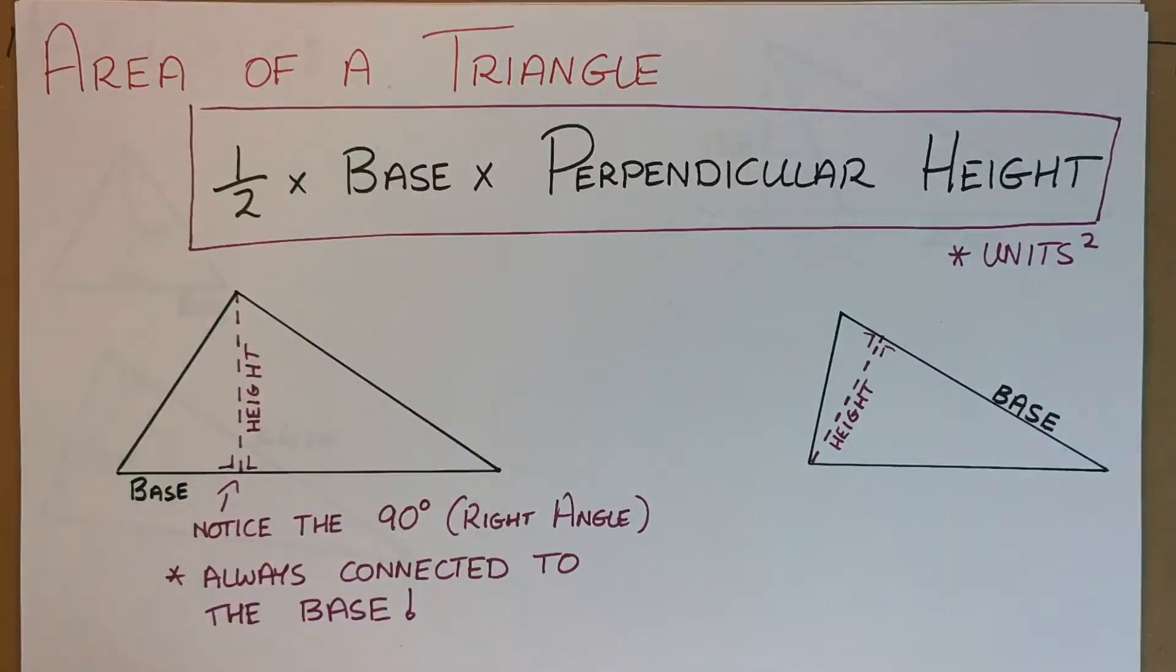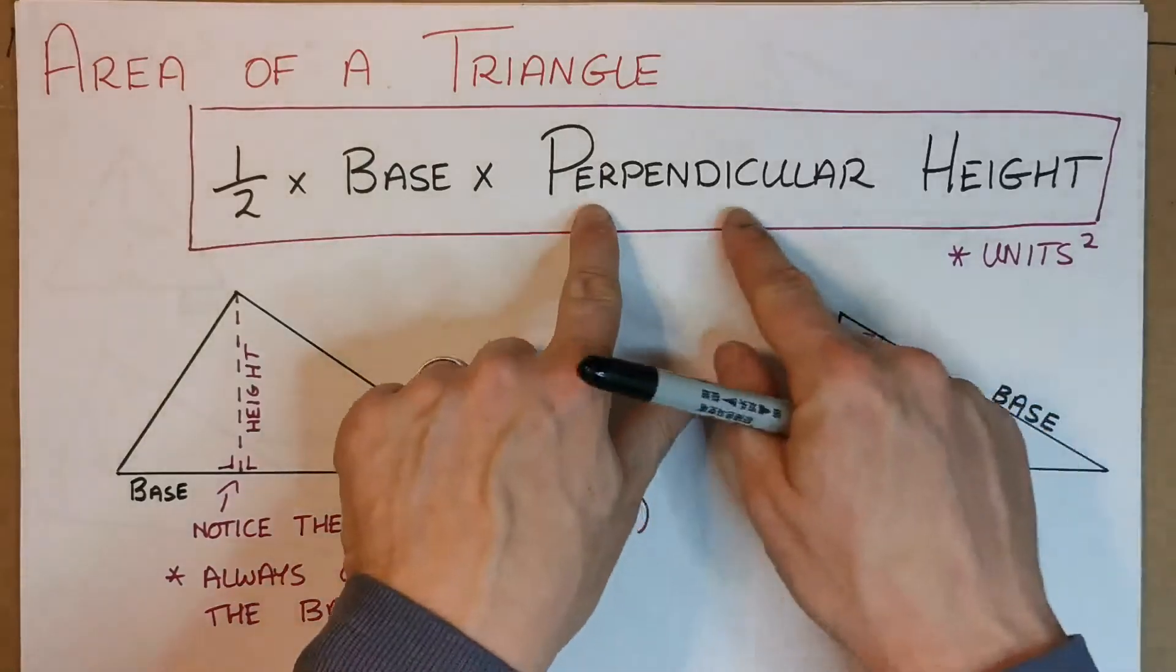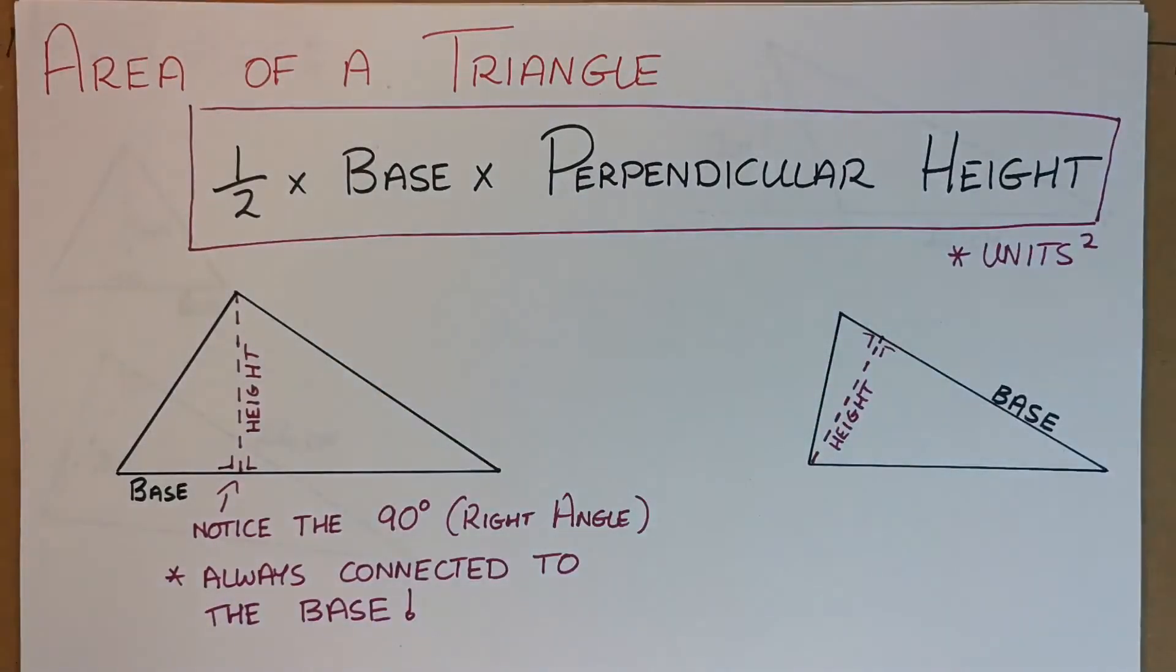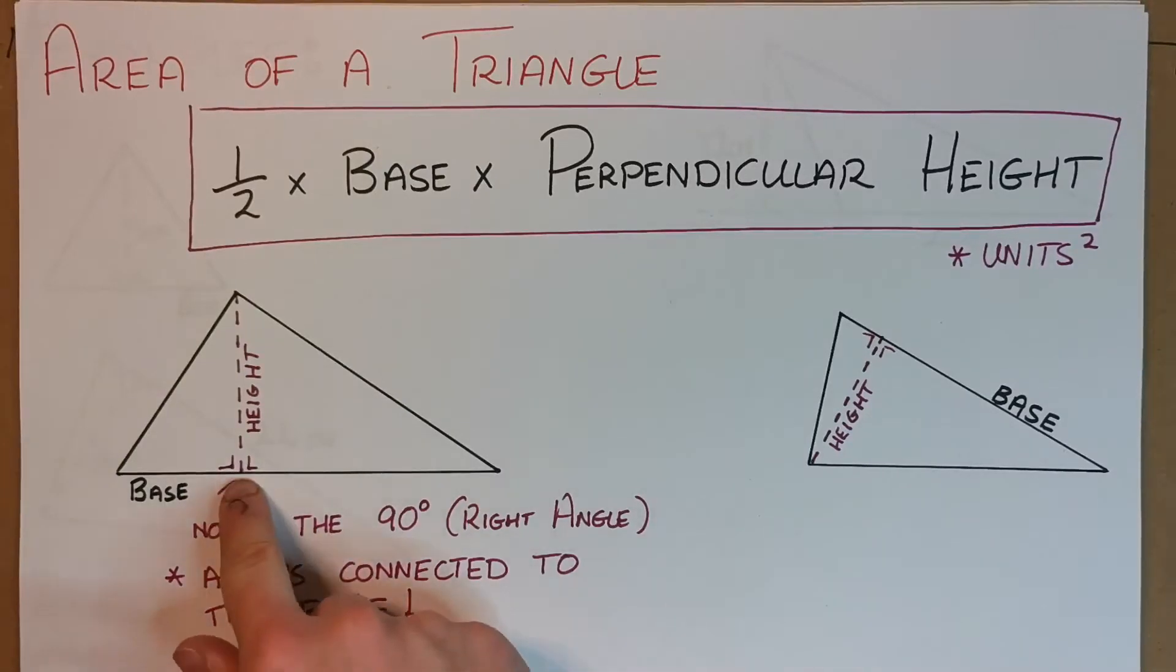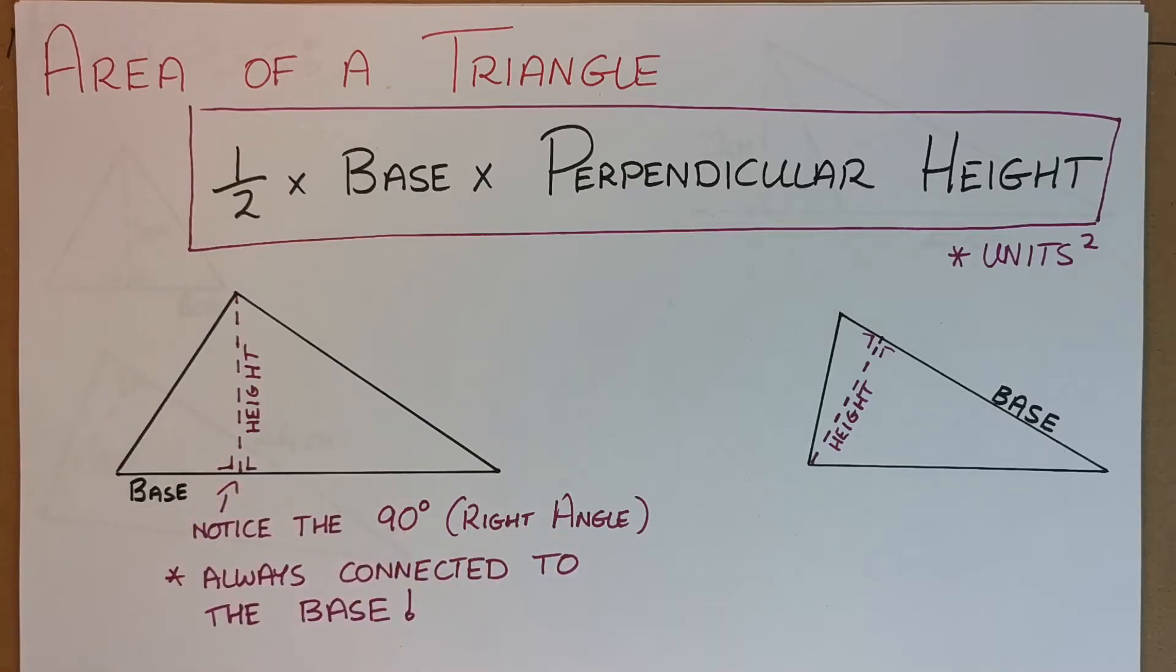We know it as half the base by the perpendicular height. Perpendicular height might be something new to you if you're in first year. Just realize that the perpendicular height comes straight up from the baseline, so it makes this right angle—90 degrees from the baseline.